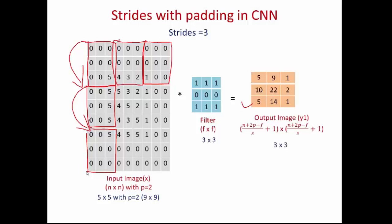So if you have an n×n input image with padding p, stride s=3, and filter size f×f, the output dimension is ⌊(n+2p−f)/s+1⌋ × ⌊(n+2p−f)/s+1⌋. I hope you enjoyed this video on strides in convolutional neural networks. If you like this video, subscribe to my channel for more updates.